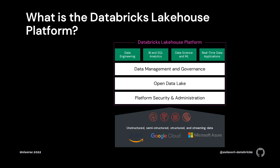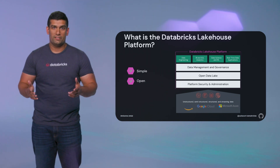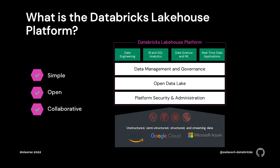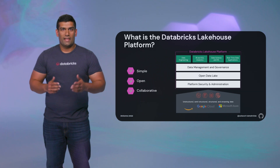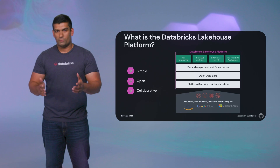The Databricks Lakehouse platform is unique in three ways. First, it's simple — data only needs to exist once to support all of your data workloads on a single common platform. Second, it's open — based on open source and open standards to make it easy to work with existing tools and avoid proprietary formats. Third, it's collaborative — data engineers, analysts, data scientists, and machine learning engineers are able to work together much more easily without any artificial silos. These three properties make the Lakehouse an ideal tool for solving data and machine learning problems in the simplest way possible.